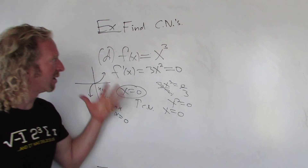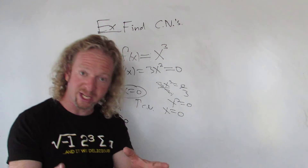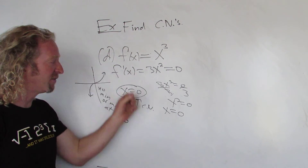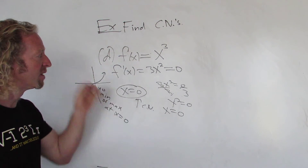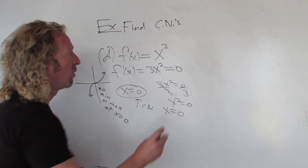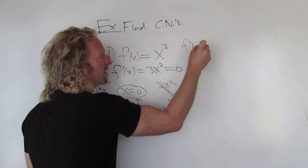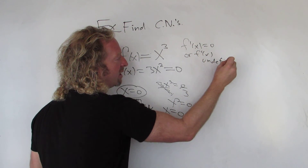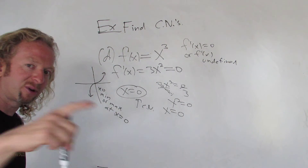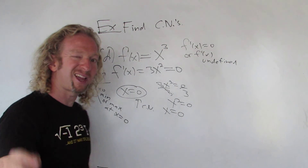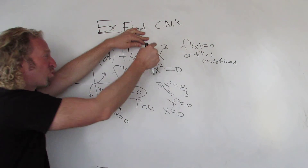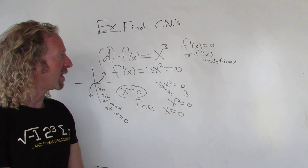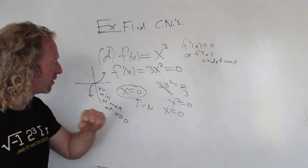Critical numbers are numbers in the domain of the function where the derivative is zero or undefined. They have to be in the domain of the original function — that's super key. Thanks for watching, I hope this helped someone out there.